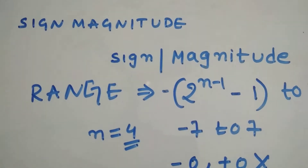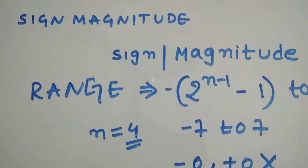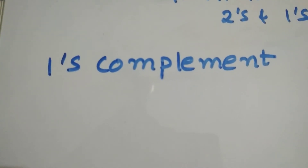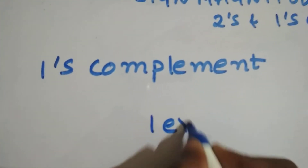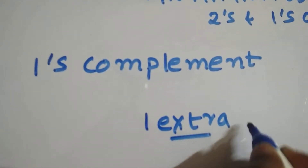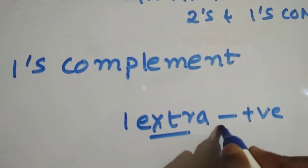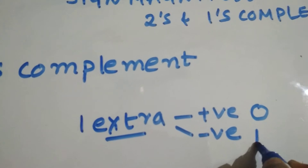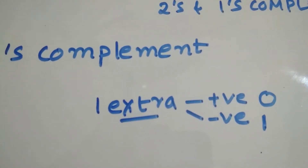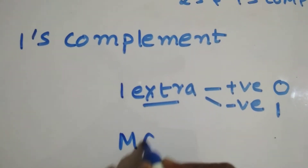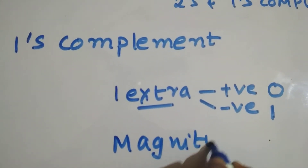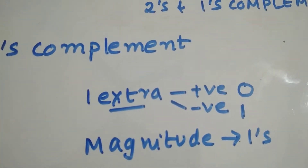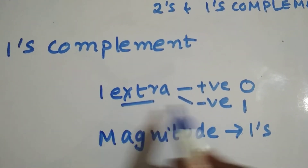Let's look at one's complement and whether this issue is solved. In one's complement, it's similar to signed magnitude — we use one extra bit for sign, where 0 is positive and 1 is negative. That rule remains the same. What changes is the magnitude: the magnitude is ones-complemented, while the sign bit remains the same.